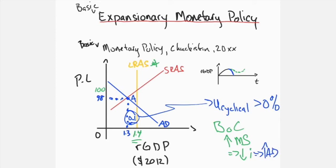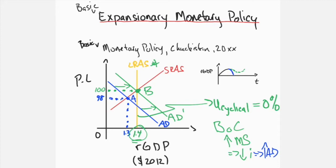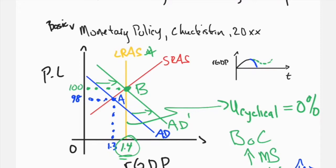The AD curve shifts to the right from AD to AD'. This results in a new equilibrium at point B — output equal to 1.4 units of real GDP at a price level of 100 — placing the economy at its potential output with no cyclical unemployment. To achieve this outcome requires that the central bank commits to an expansionary policy before the economy begins to decline, minimizing the duration and severity of the recession.